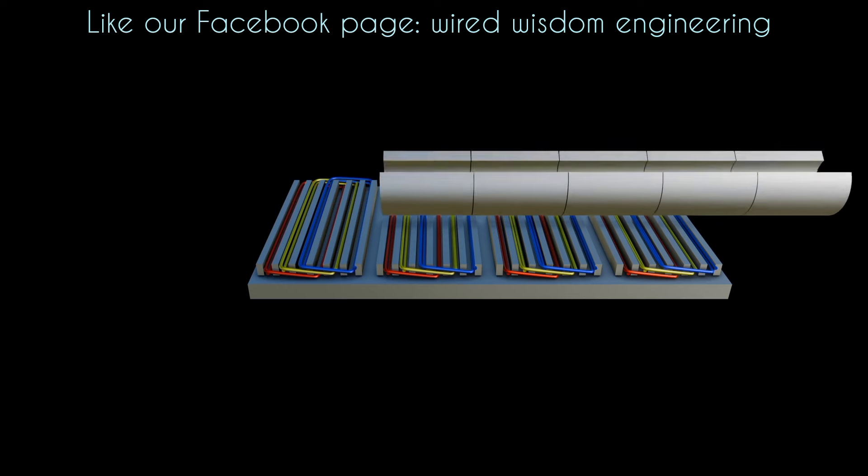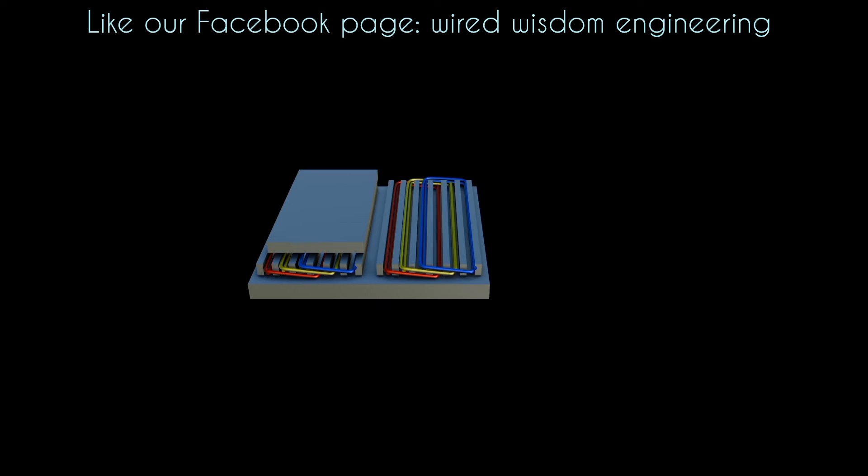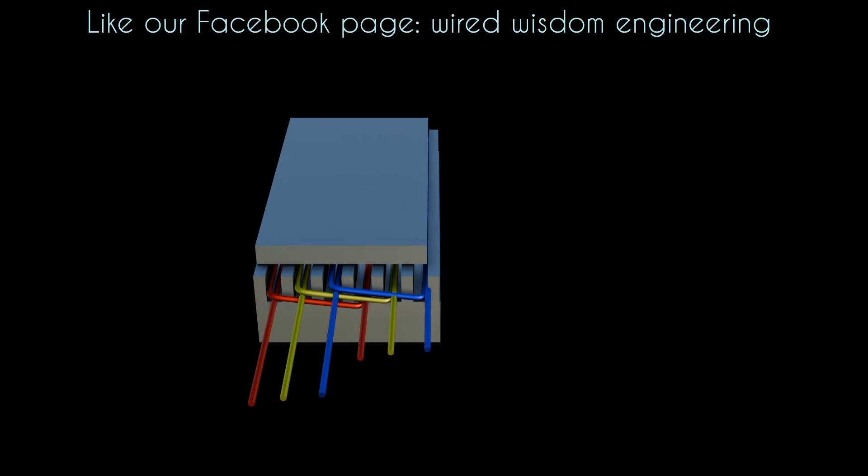Similarly, if the rotor is cut and spread out flat, it forms the system's secondary. As a result, the primary and secondary of a linear motor are flat and appear in the form of a sheet. Now, when we apply a three-phase alternating current to the three-phase coils arranged linearly, this is what happens.